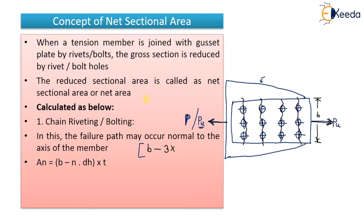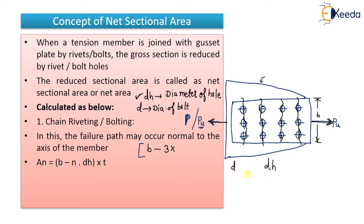DH is the diameter of the hole. There is a difference between D and DH: D is the diameter of the bolt and DH is the diameter of the hole. The diameter of the hole will be slightly more than the diameter of the bolt. For example, for an 18 mm diameter bolt, DH will be 20 mm. T is the thickness of the plate or angle, which is given. In this way, you can find out the net area of the plate.